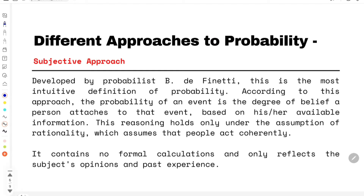The third approach is called the subjective approach. It was developed by a probabilist named de Finetti, and it is the most intuitive definition of probability. According to this approach, the probability of an event is the degree of belief a person attaches to that event based on his or her available information. This reasoning holds only under the assumption of rationality, which assumes people act coherently. There are no formal calculations — it purely reflects the subject's opinions and past experience.